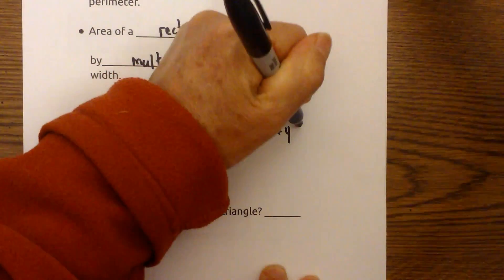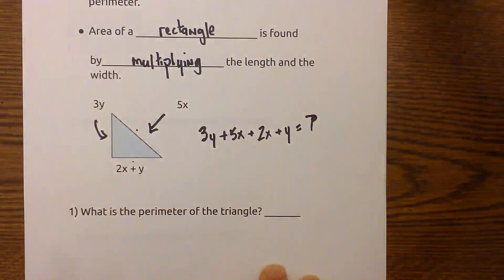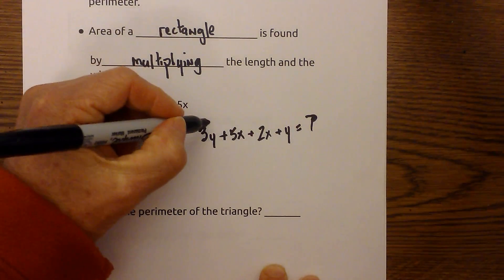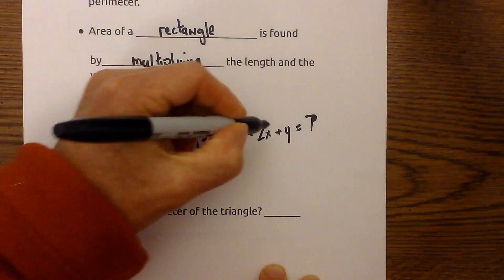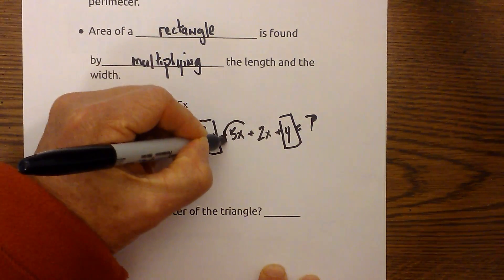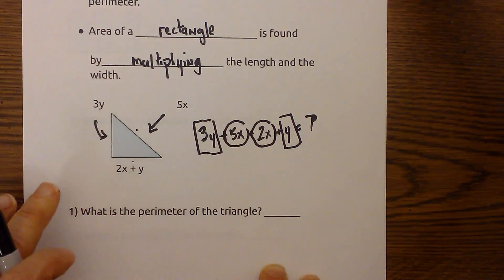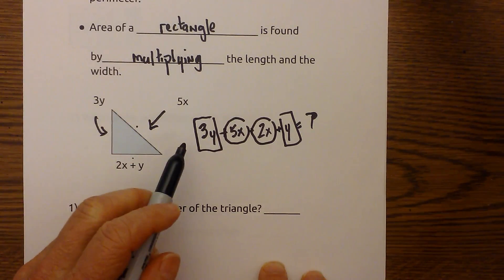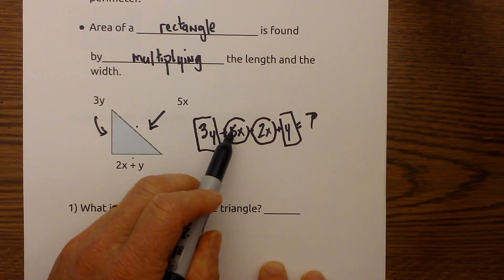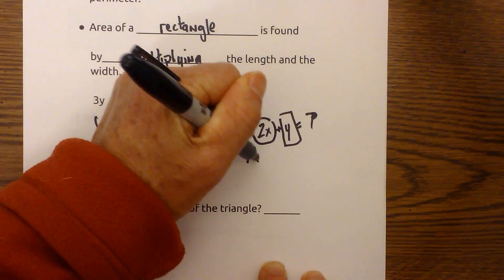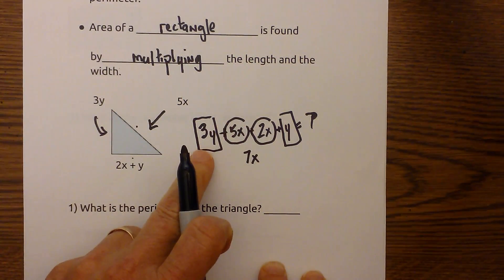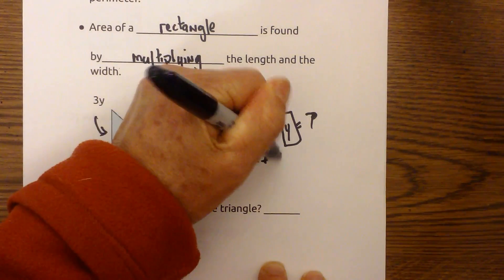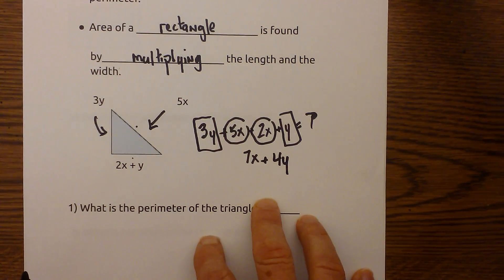Now, that equals the perimeter. What we can do at this point is combine like terms. To help you see like terms, I'll put a box around the y's and a circle around the x's so you can see the like terms. Now I just add the boxes and the circles together. So I'm going to have 5x plus 2x, which is 7x. And then I have 3y plus y, which equals 4y. So the perimeter would be 7x plus 4y.